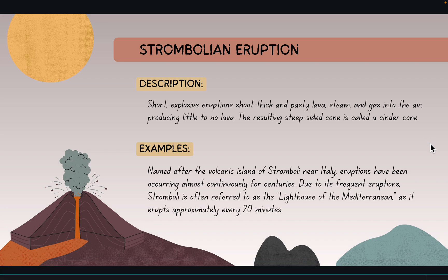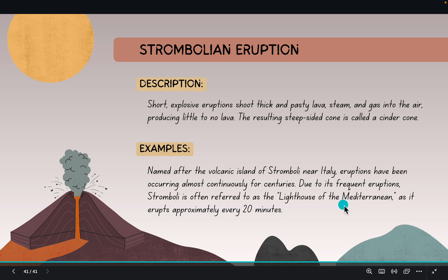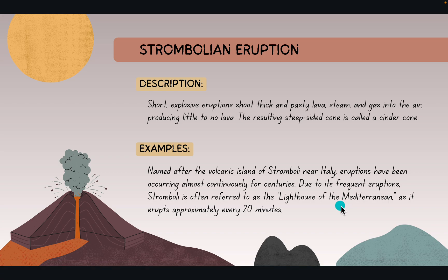Another eruption type is the Strombolian eruption — short, explosive eruptions that shoot thick and pasty lava, steam, and gas into the air, producing little to no lava flow. The resulting steep-sided cone is called a cinder cone. Named after the volcanic island of Stromboli near Italy, eruptions have been occurring almost continuously for centuries — absolutely scary. Due to its frequent eruptions, Stromboli is often referred to as the lighthouse of the Mediterranean. So, that's about it. Thank you for watching.